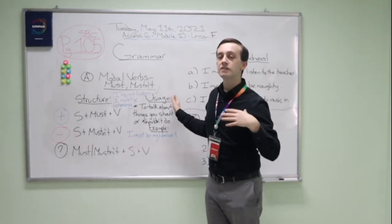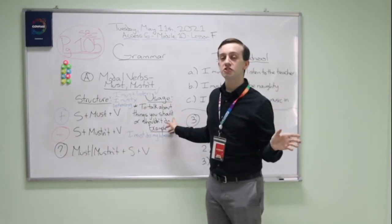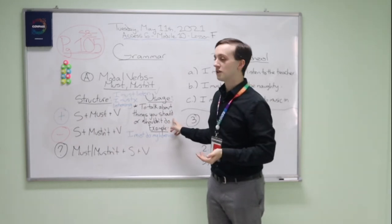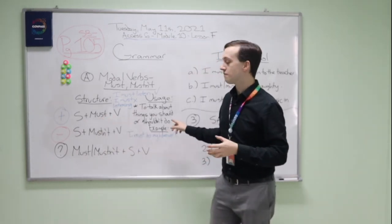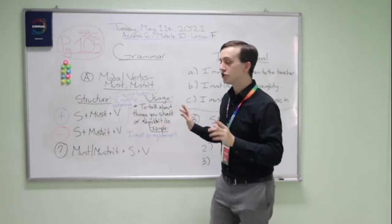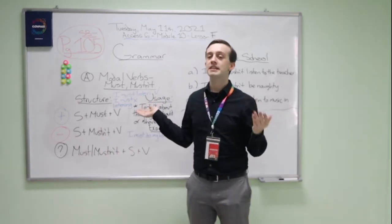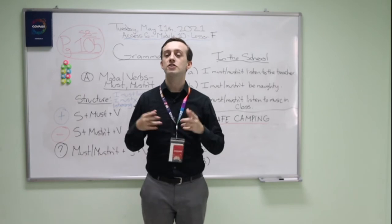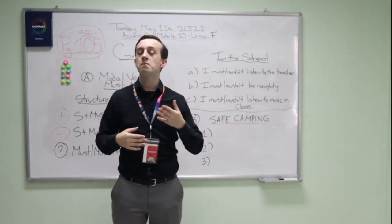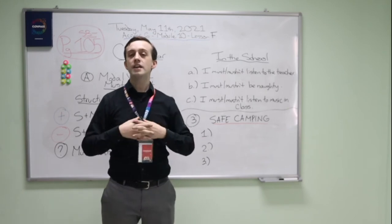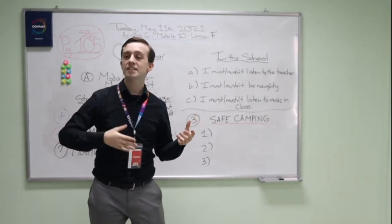When do we use must and mustn't? We use them to talk about things you should or shouldn't do. Things that are good to do, we use must. Things that are very bad to do — things we shouldn't do — we use mustn't. Let's talk about school. What must we do in school? And what is something we mustn't do in school?